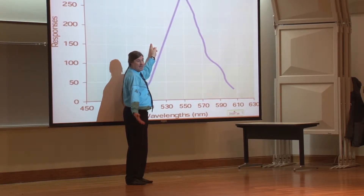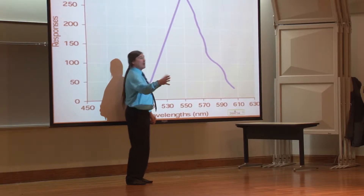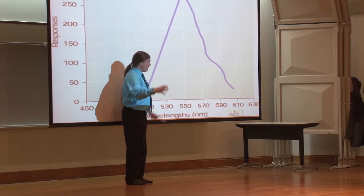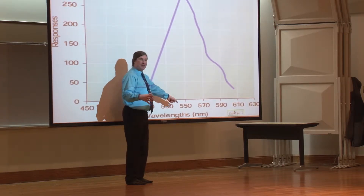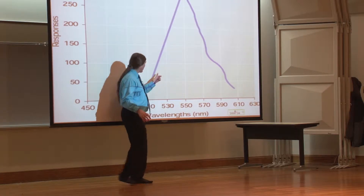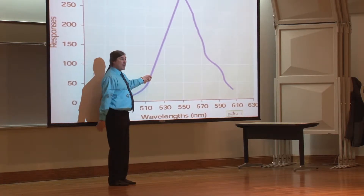That's stimulus generalization. I'm getting a response to a stimulus that's not the conditioned stimulus but is close enough to it. So in terms of my friend, I might have hung out with somebody who looked like my friend — wouldn't be the conditioned stimulus, but they might have looked enough like my friend to create that sense of craving.